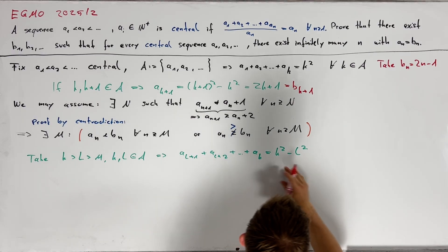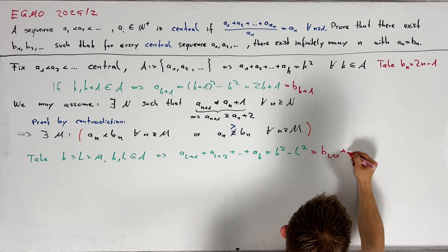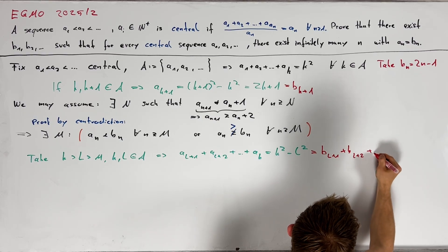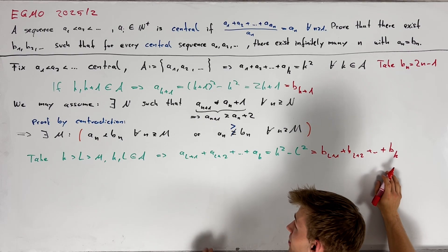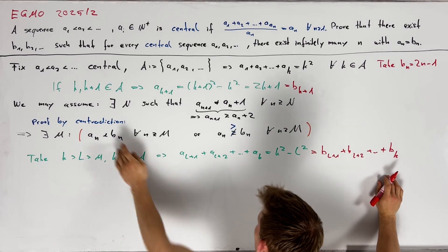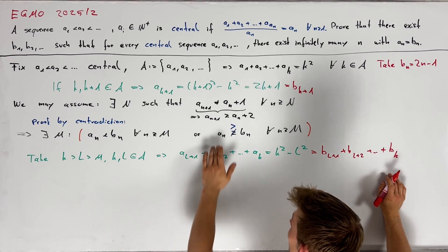On the other hand this is just equal to b_{l+1} plus b_{l+2} and so on plus bk. And now since either this inequality holds for all indices from l plus 1 to k or this inequality here, we get a contradiction since k is strictly greater than l.